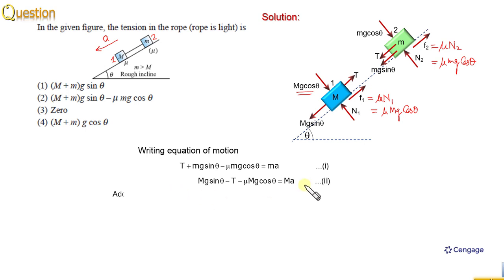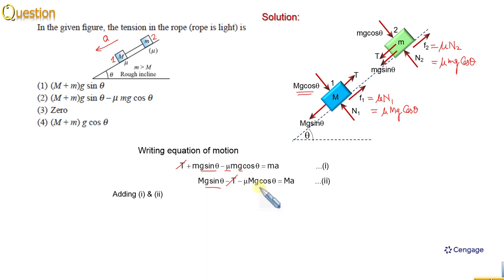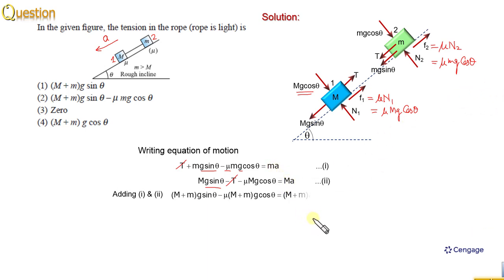Now we can add these two equations. When we add them, T cancels out. We can take g sinθ as common, giving (M + m)g sinθ. We can take μg cosθ as common on the other side, giving μ(M + m)g cosθ. The right-hand side becomes (M + m)a. The (M + m) terms cancel throughout, giving the acceleration: a = g(sinθ − μcosθ).